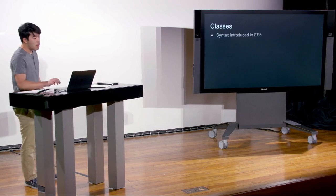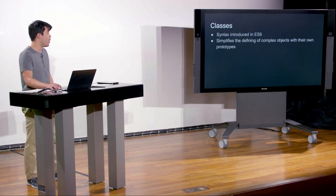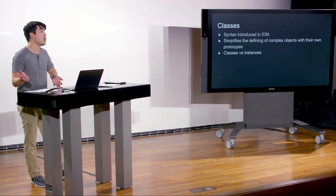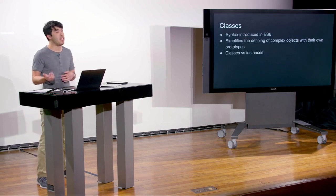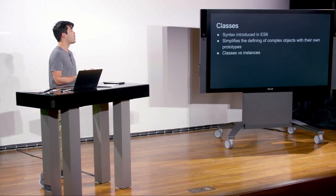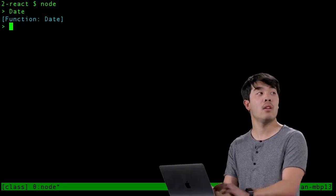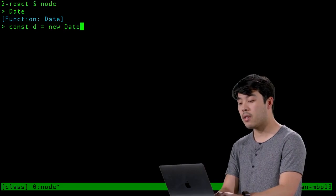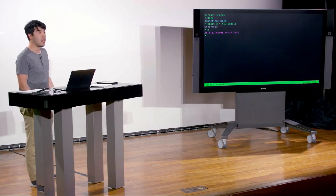This week we're going to start with classes, a syntax introduced in ES6 that simplifies defining complex objects with their own prototypes. You have two different things: classes and instances. A class is an abstract declaration saying any objects you create will have certain methods or properties. When you turn that abstract class into an object, that's called an instance — like `Date` (class) versus `const d = new Date()` (instance).